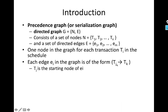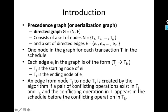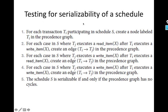Each edge Ei in the graph is of the form Tj to Tk — that is, from one transaction to another. Tj is known as the starting node of Ei and Tk is known as the ending node of Ei. An edge from Tj to Tk is created by the algorithm if a pair of conflicting operations exist in Tj and Tk, and the conflicting operation in Tj appears in the schedule before the conflicting operation in Tk. Then we will draw an edge from Tj to Tk.